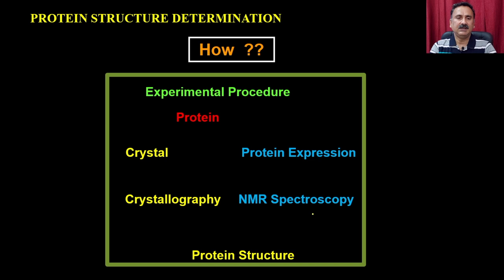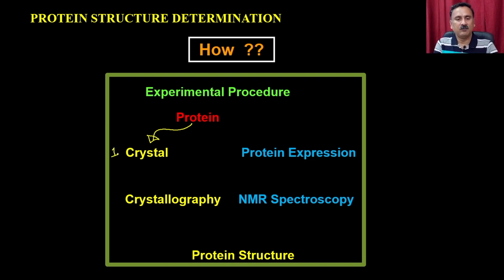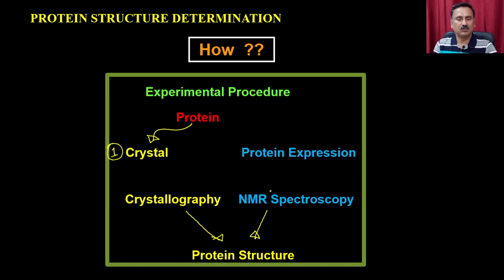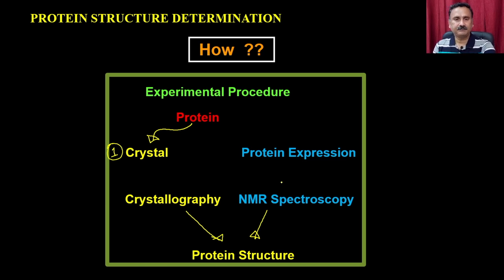This is all about the protein structure determination. We have discussed about the experimental procedures. We discussed about two methods: in one situation when you can be able to produce the crystals, you are actually going to use X-ray crystallography to solve the protein structures. In the second approach, you can use NMR spectroscopy. Both X-ray and NMR are actually going to give you the protein structures. The question comes: what is the difference between protein structure solution either by X-ray crystallography or NMR spectroscopy? What are the advantages and disadvantages when you are going to use X-ray versus NMR?